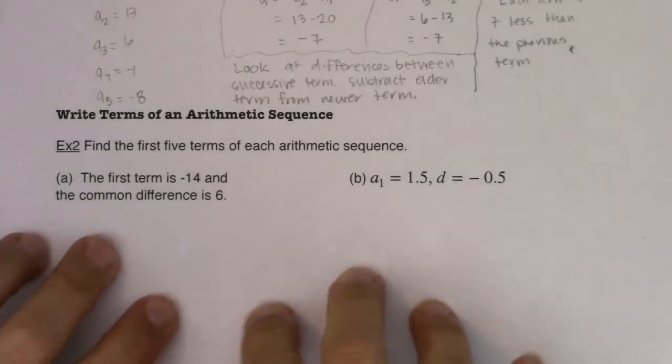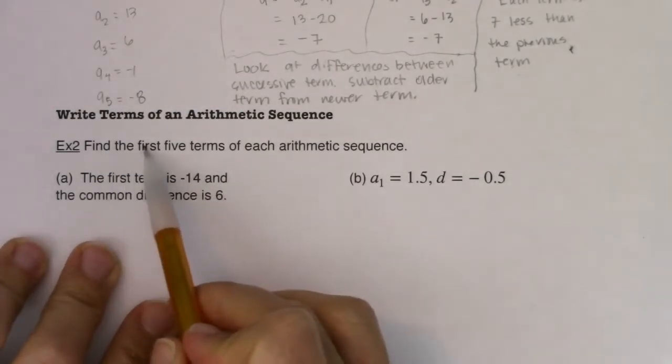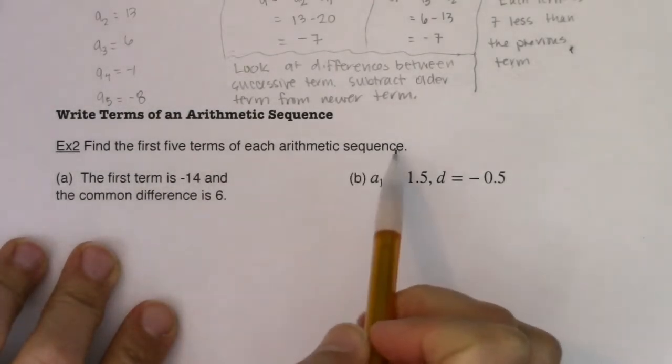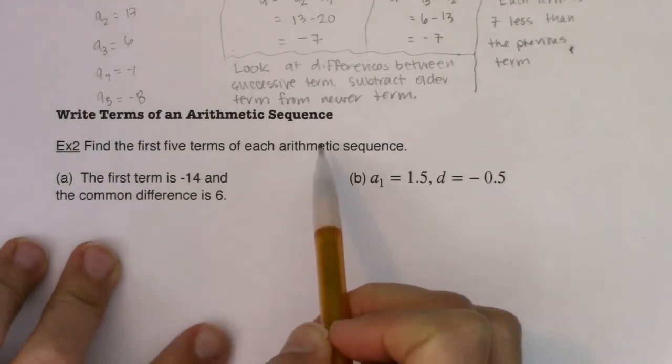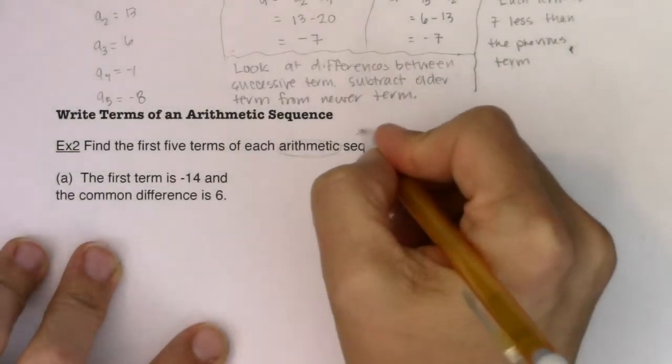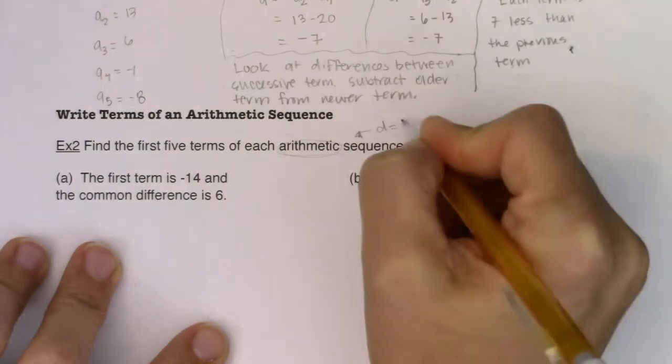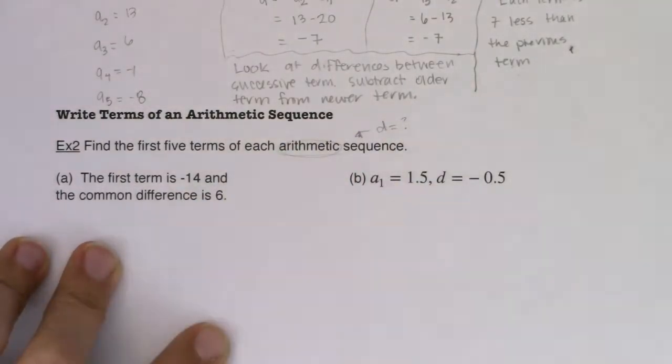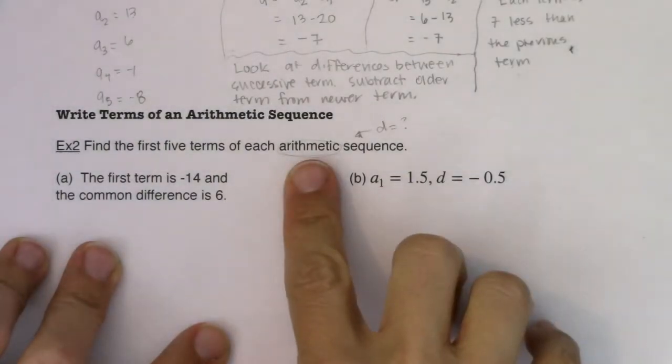Hey, Math 31. Welcome to example two. So here we're going to find the first five terms of each arithmetic sequence. A couple things to take note of right out the gate. Anytime you hear arithmetic sequence, I know there's going to be a D involved. There is some common difference. It'll change for each of parts A and B.